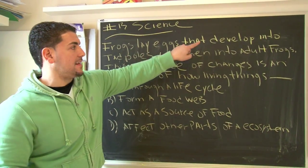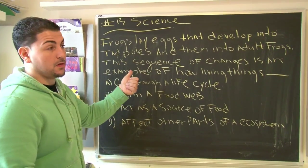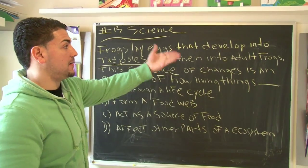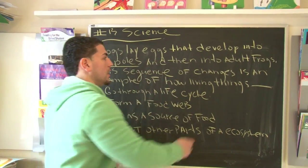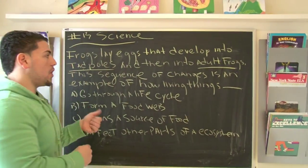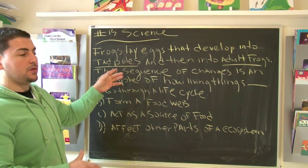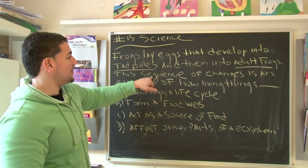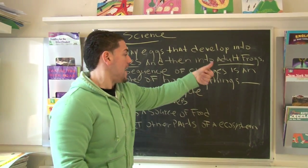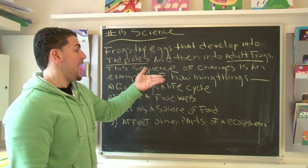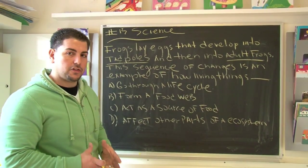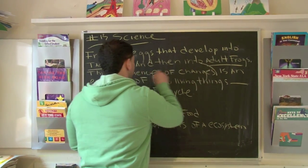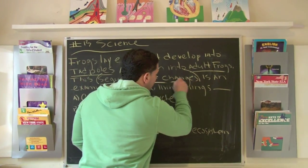Frogs lay eggs that develop into tadpoles. There goes a key word because we've got to know what a tadpole is. And then into adult frogs — there goes the clue. Adult frogs. So we know right off the first sentence that tadpoles is the way they start out and then they develop into adult frogs. This sequence of changes is an example of how living things — what? Those are the key context words here.